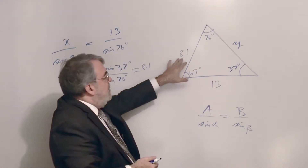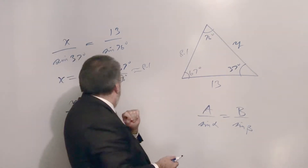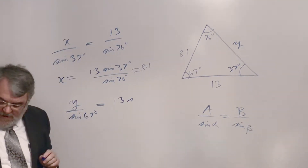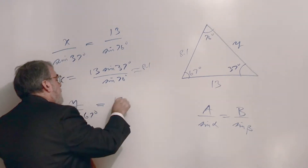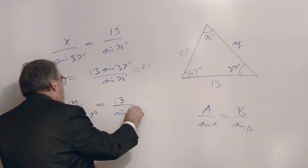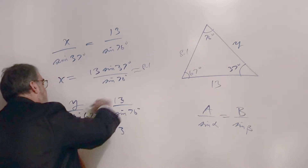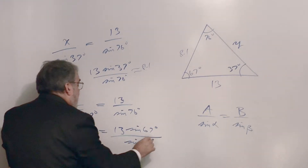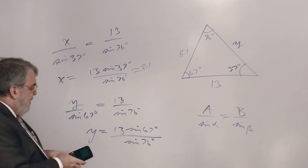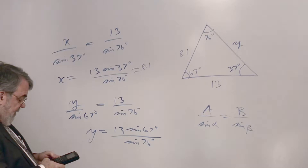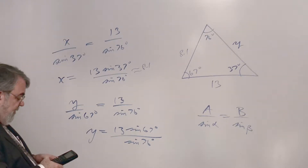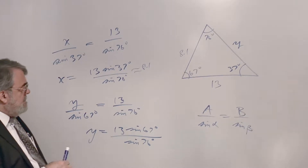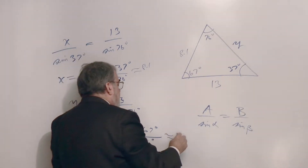13 is supposed to be exact and 8.1 is a decimal approximation, so let's go with the exact value. I'll use 13 divided by sine 76 degrees. So y equals 13 sine 67 degrees over sine 76 degrees. Calculating: 13 sine 67 divided by sine 76 is about 12.3.